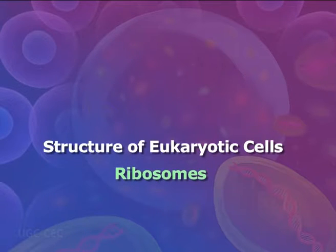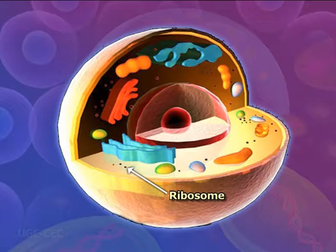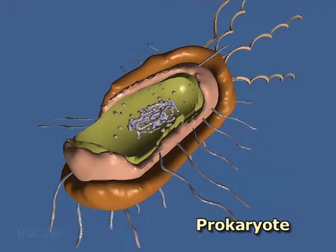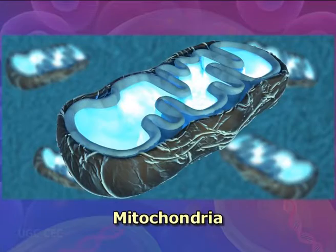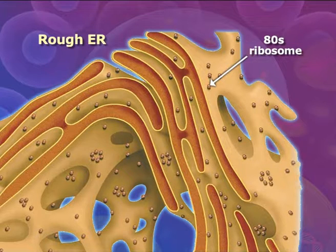Unlike most other organelles, ribosomes are not surrounded by a membrane. They are the site of protein synthesis in a cell and exist in two sizes. 70S ribosomes are found in all prokaryotes, chloroplasts, and mitochondria, suggesting they evolved from ancestral prokaryotic organisms, and are free-floating. 80S ribosomes are found in all eukaryotic cells, attached to the rough endoplasmic reticulum.